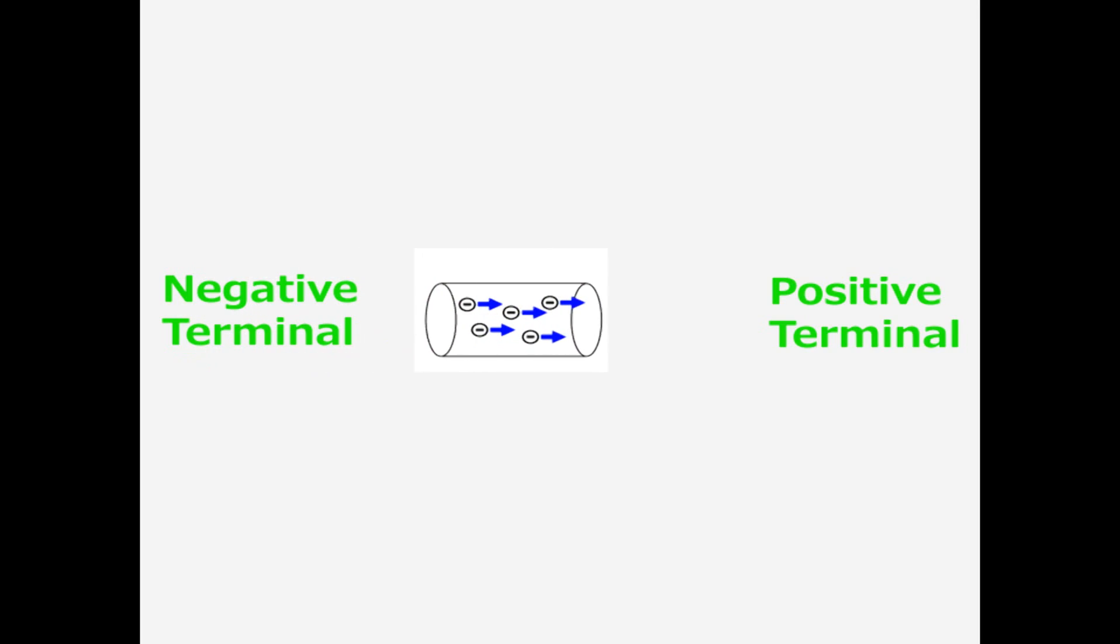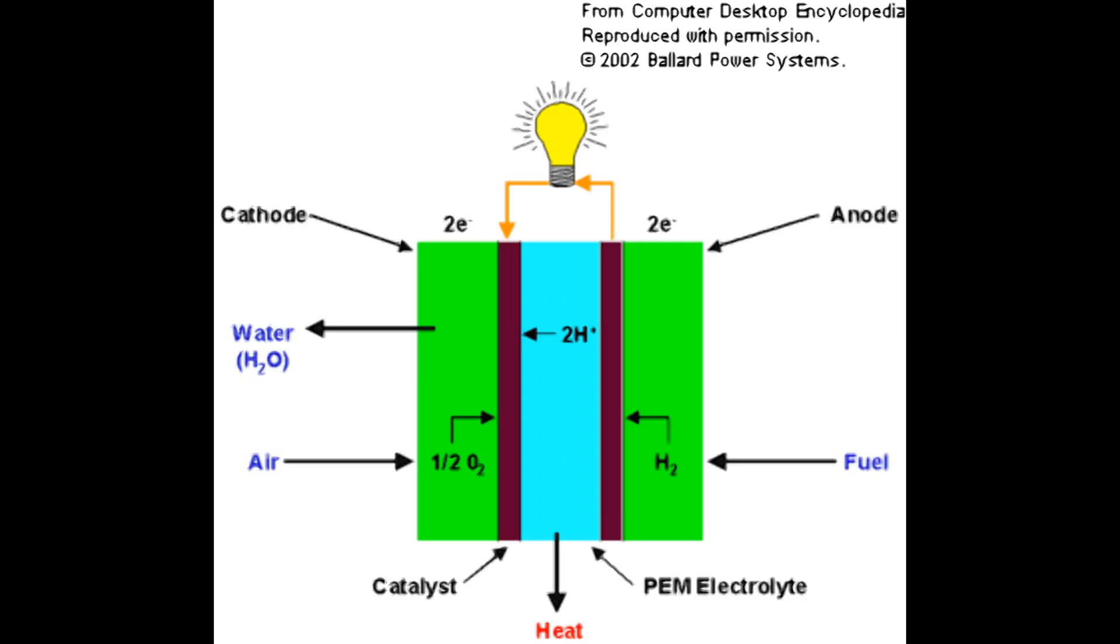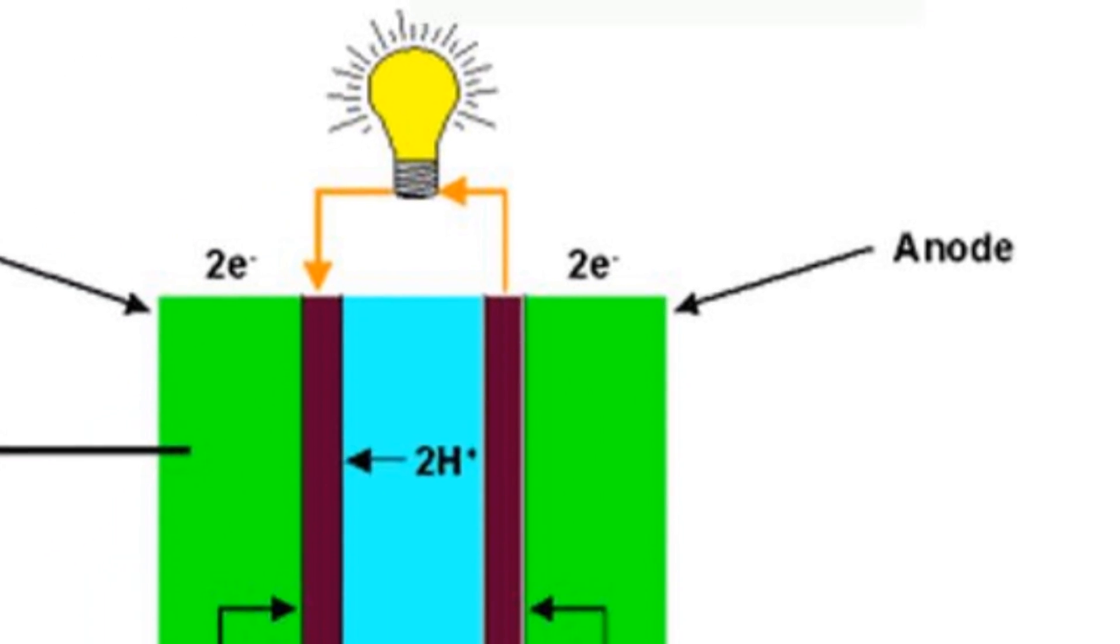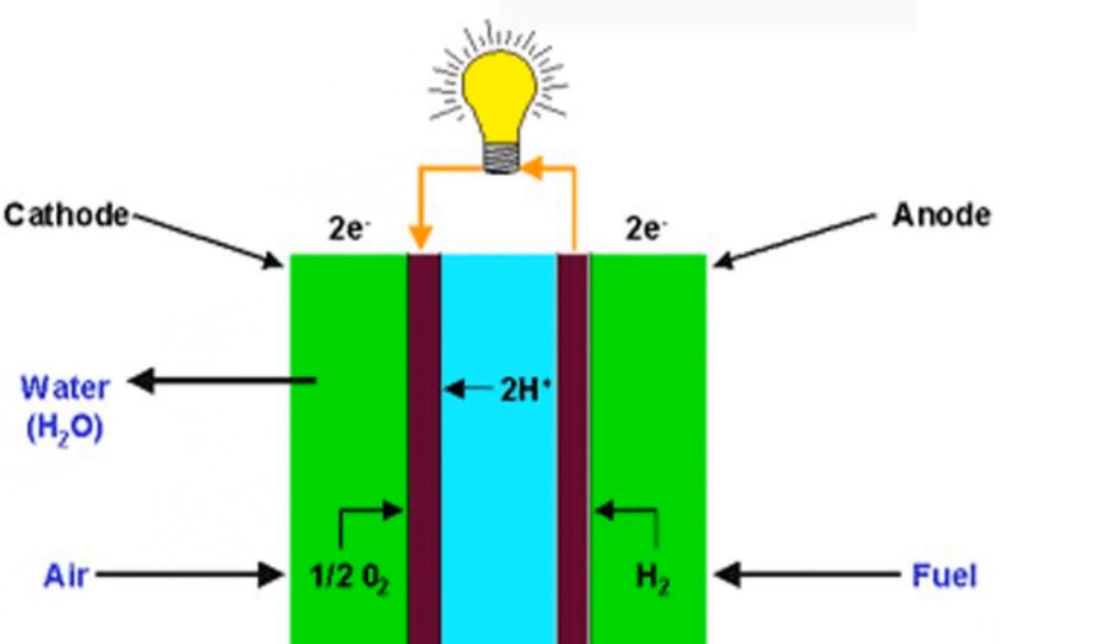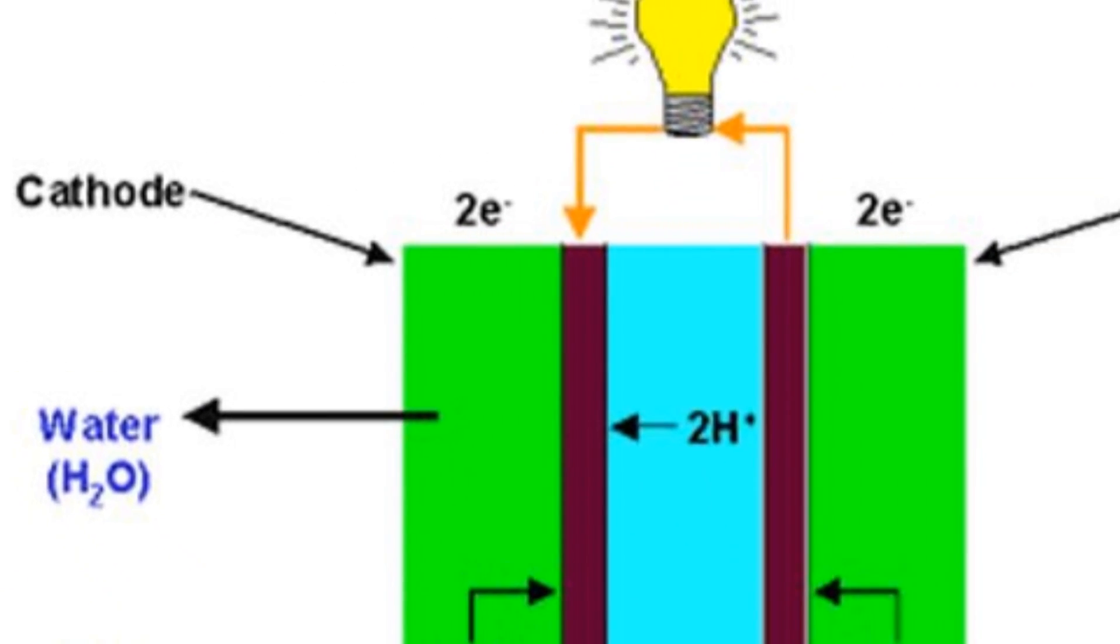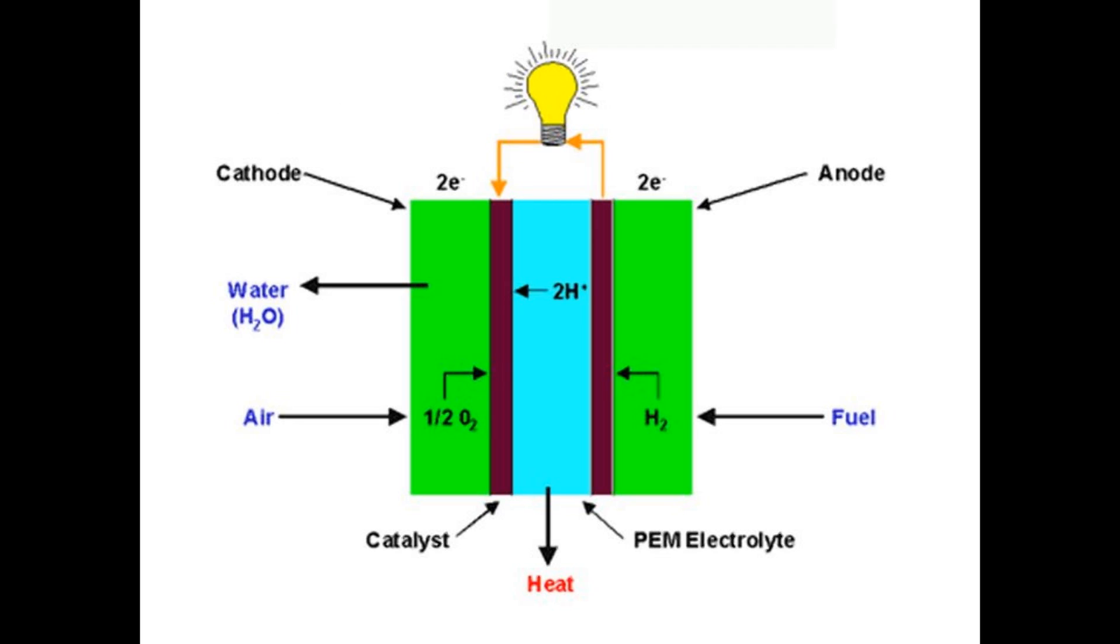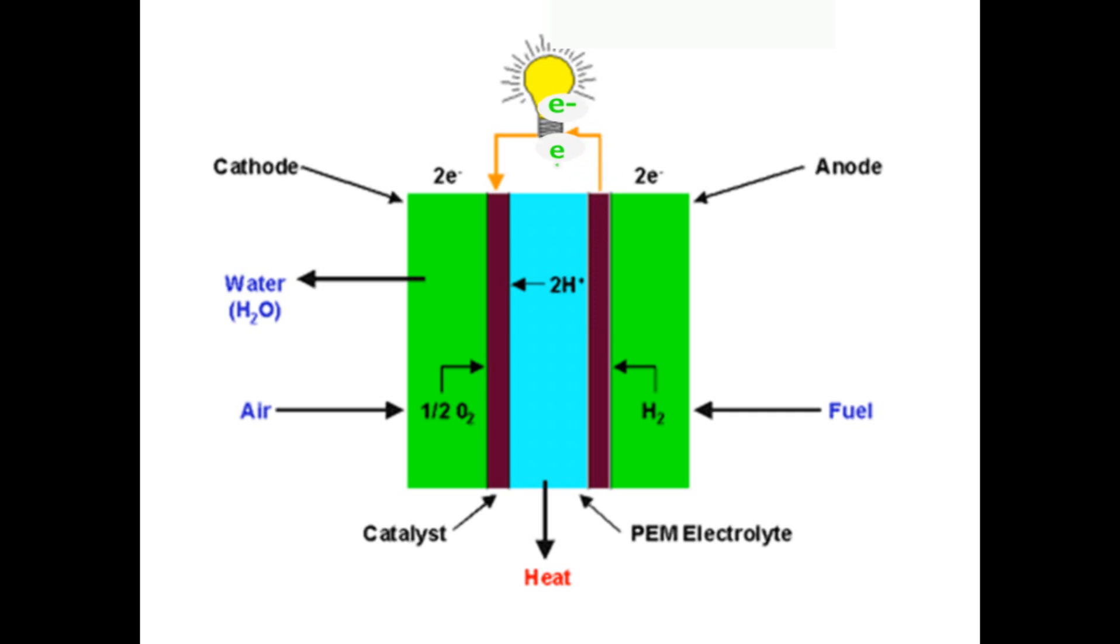The electrons travel from the negative terminal to the positive terminal when the battery is being discharged. The negative terminal is called the anode, while the positive terminal is called the cathode. At the anode, electrons are lost, and at the cathode, electrons are gained. So electrons travel from the anode to the cathode.